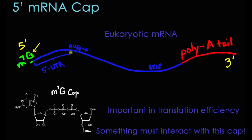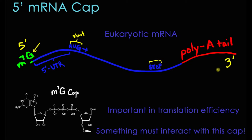So this is what we're really interested in for this presentation. Right after that we've got our 5' untranslated region and our start codon — this is the start of our translated region. After that, we have our coding region that will be translated into the protein of interest, and then our stop codon. Finally, at our 3' end, we've got our poly-A tail.